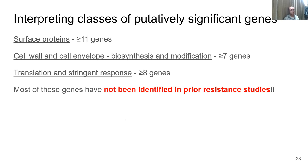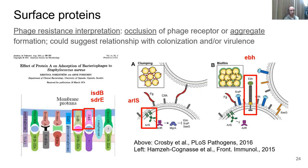I'll focus on three classes of genes that make sense and have biologically plausible roles in phage resistance. The first is surface proteins, which can either lead to occlusion of the phage receptor or aggregate formation — the first would increase phage resistance, the second would decrease it. This also suggests a relationship with colonization and virulence, because many of these genes, like ISDB and SDRE, are involved in interactions with human cells. The ARLS/ARLR system responsible for regulating surface proteins and switching between clumping and biofilm states came up as significant, as did the large surface protein PBH.